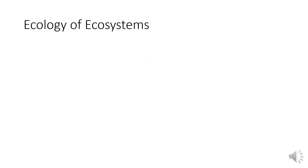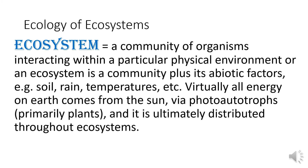Ecology of Ecosystem. An ecosystem is a community of organisms interacting within a particular physical environment, or an ecosystem is a community plus its abiotic factors. Examples include soil, rain, temperatures, and many more.